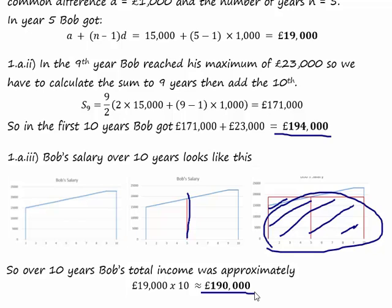Doing that calculation, we find that Bob earned around £190,000. And doing our precise calculation, we find that Bob earned £194,000, which means the answer that we've calculated is probably right.